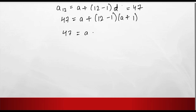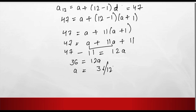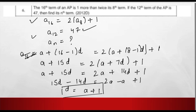So 47 equals a plus 11 into (a plus 1). Expanding: 47 equals a plus 11a plus 11. So 47 minus 11 equals a plus 11a, which is 12a. Therefore 36 equals 12a, giving a equals 36 divided by 12, which equals 3.